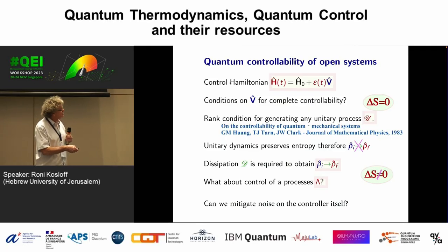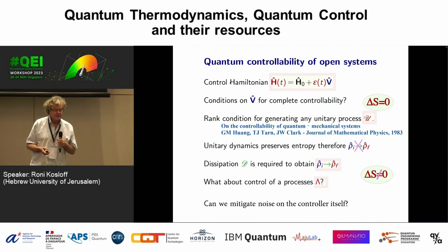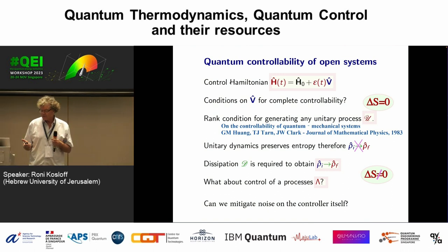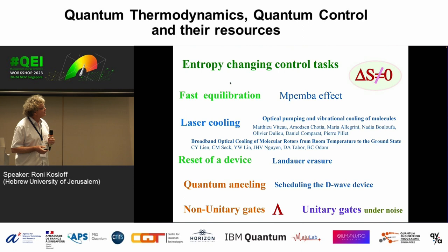For process control, if I want to do a quantum gate, that's process control. Can I mitigate the noise? Can I design my control to minimize environmental noise? Once I open my system to the environment, it's not closed anymore. These are the problems I want to deal with in open system control.